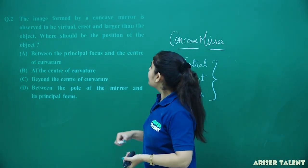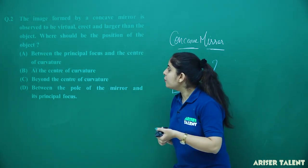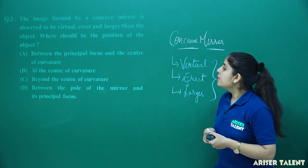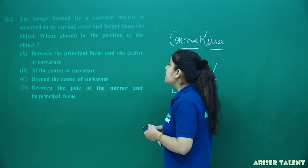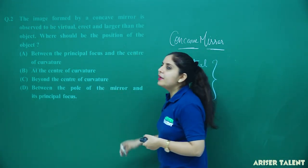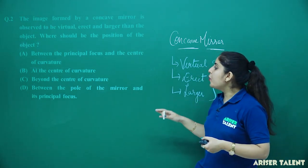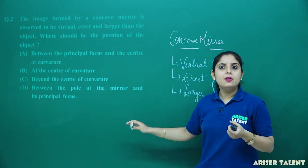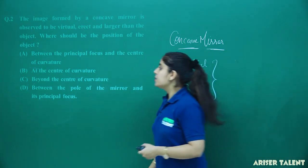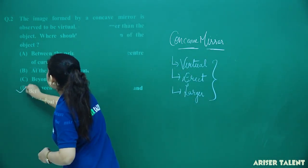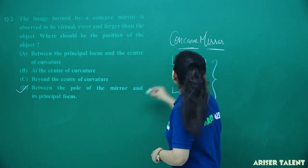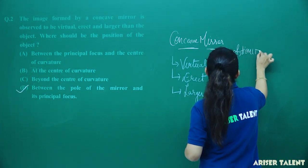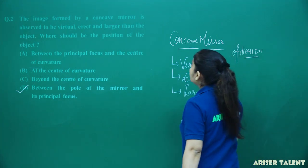So which option is correct here? The options are: between principal focus and center of curvature, at the center of curvature, beyond the center of curvature, or between the pole of the mirror and the principal focus. You have to keep your object between the pole of the mirror and the principal focus, so option number D will be correct.